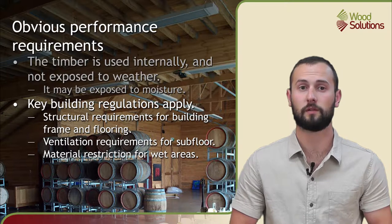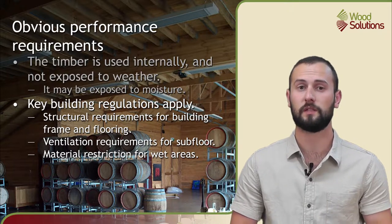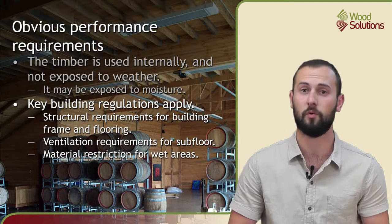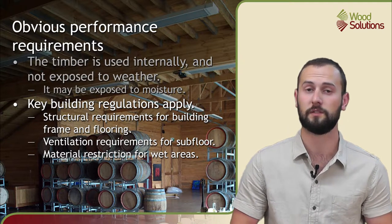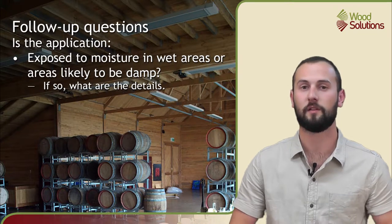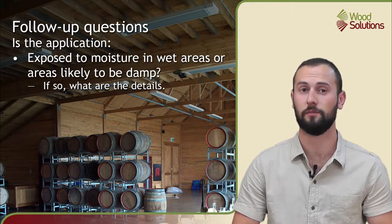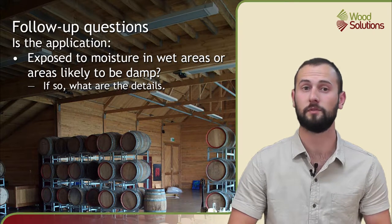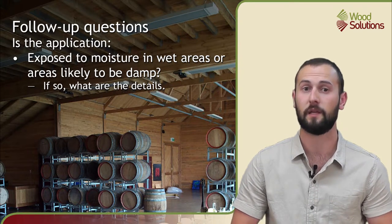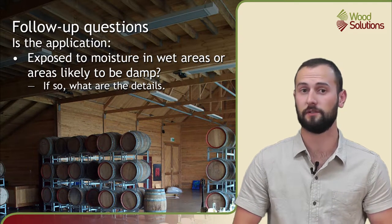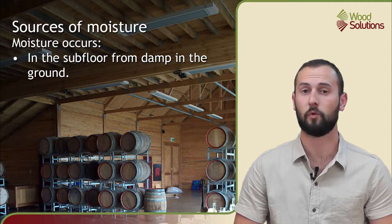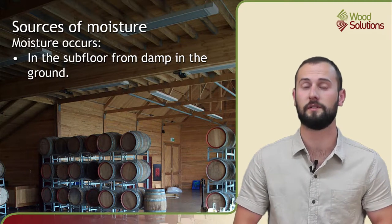Though the timber or wood product is used inside, moisture can still have a large impact on product performance, especially as more and more areas and appliances with running water are being introduced in homes and offices. The follow-up questions to ask include: is the application exposed to moisture in wet areas or areas likely to be damp? If so, what are the details? Moisture either as water vapour, liquid water or as steam can occur in many areas inside a building.